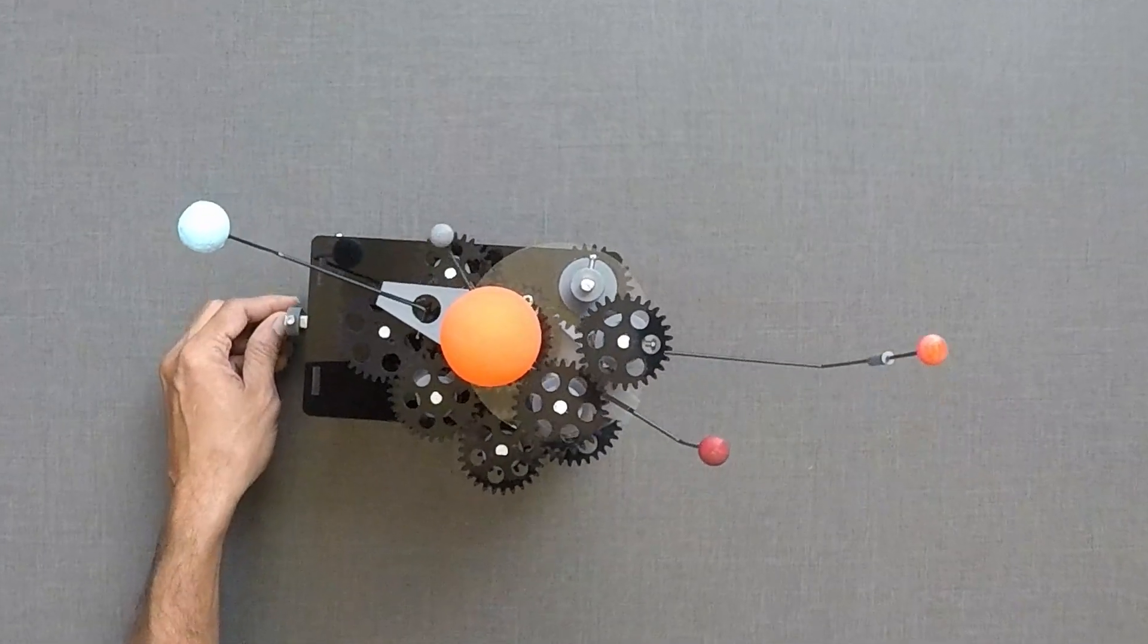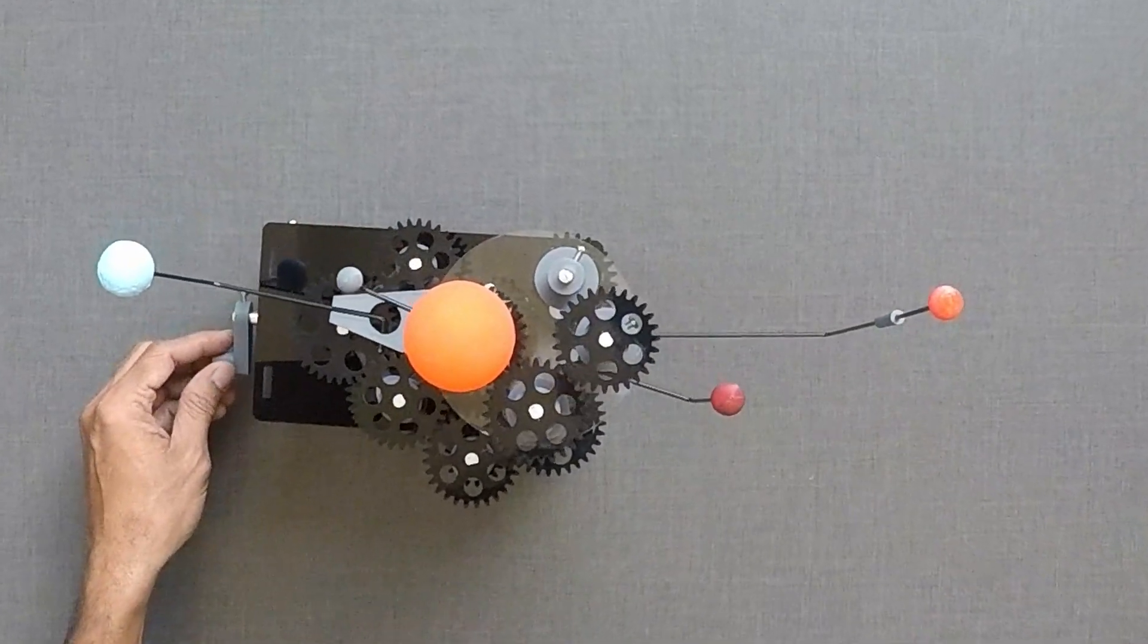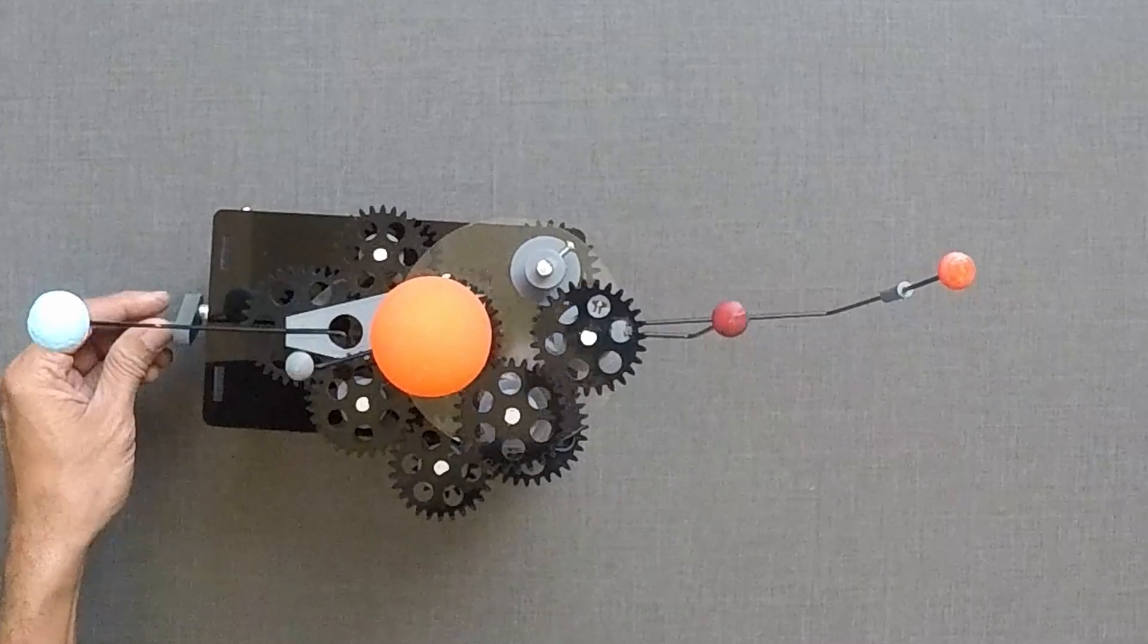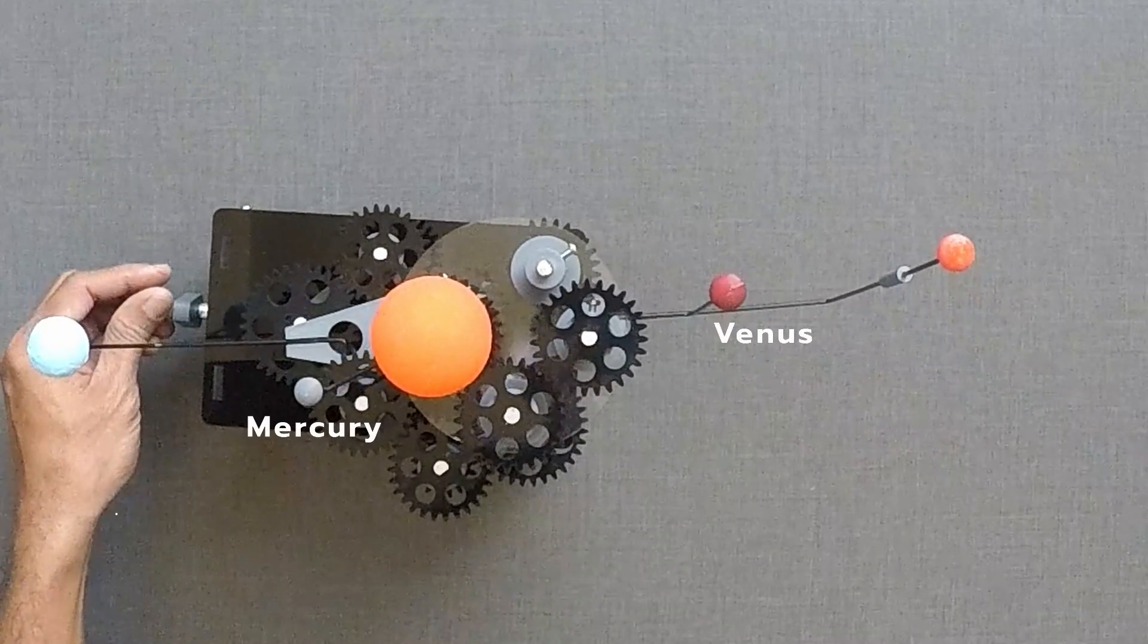This model simulates the relative speed of inner planets of our solar system: Mercury, Venus, Earth, and Mars.